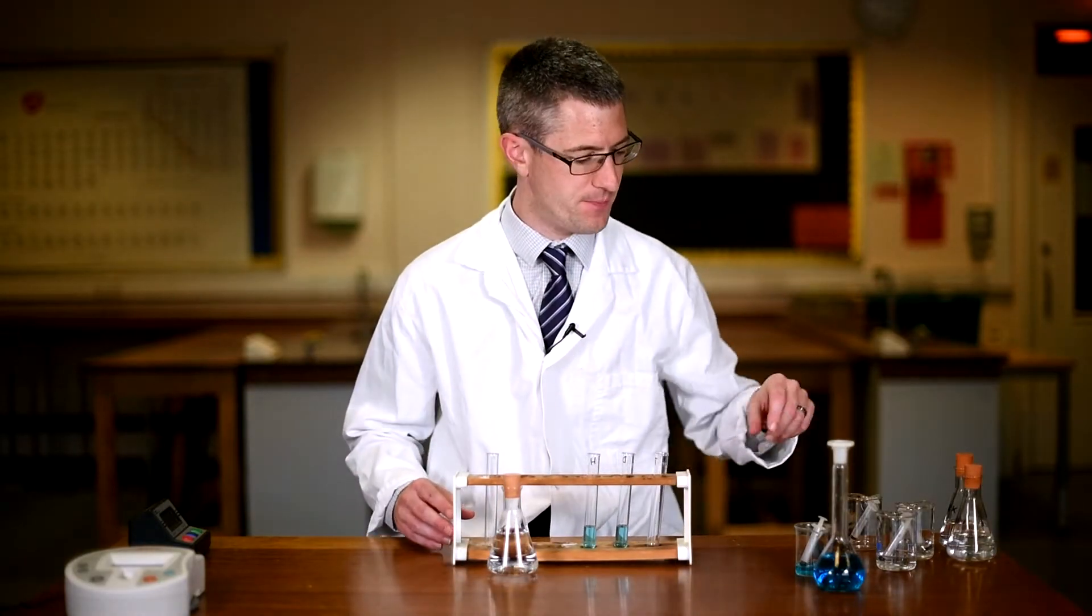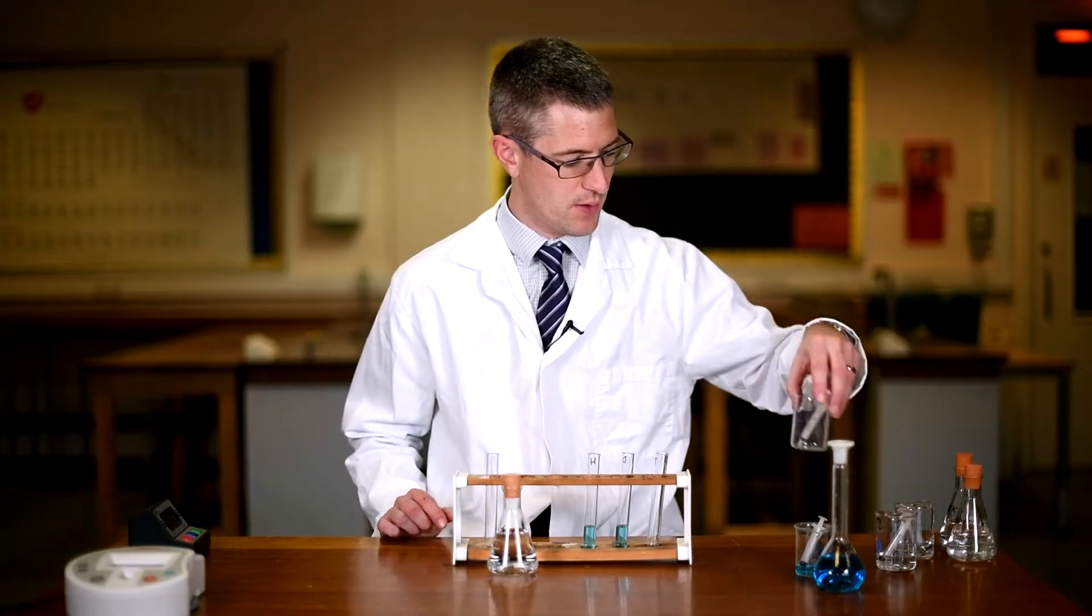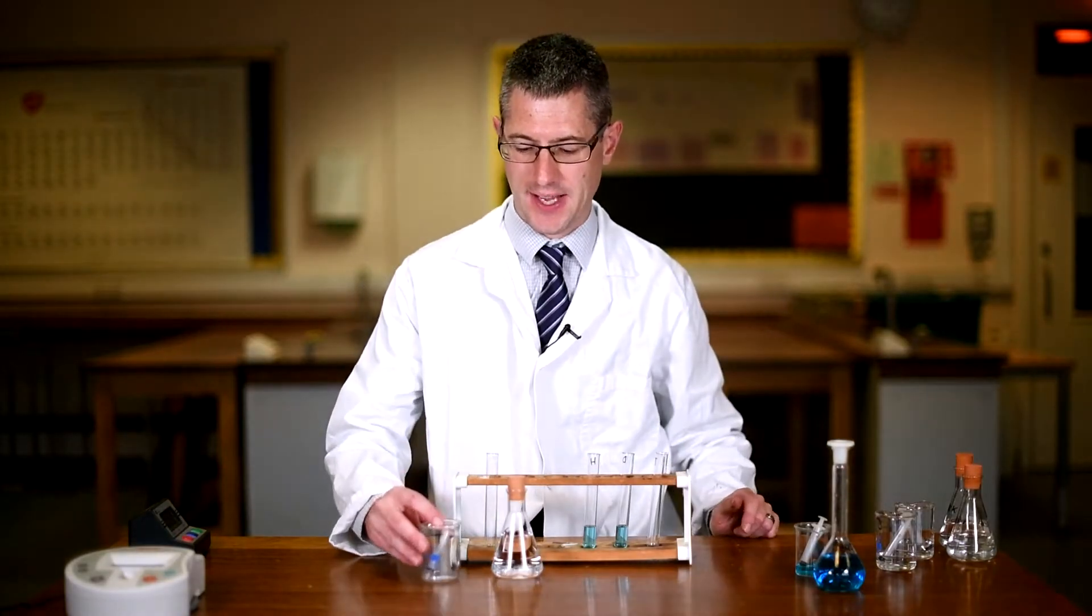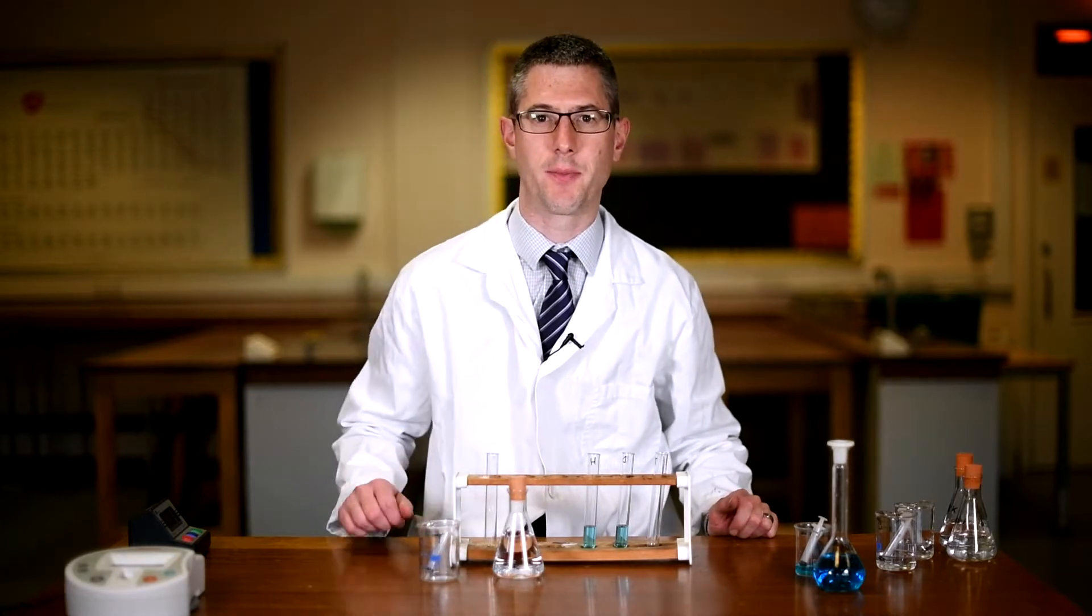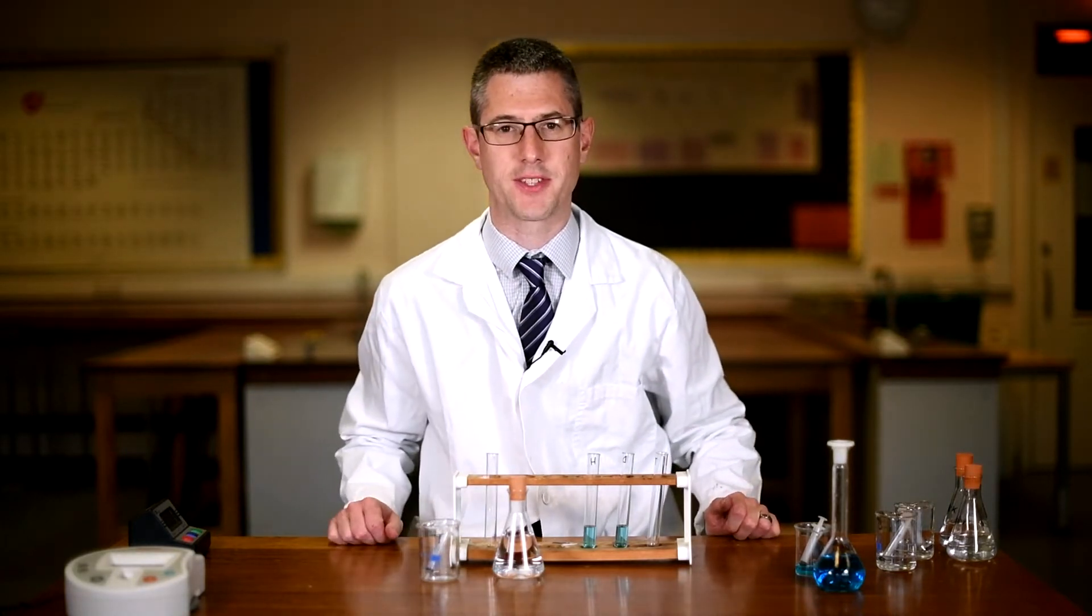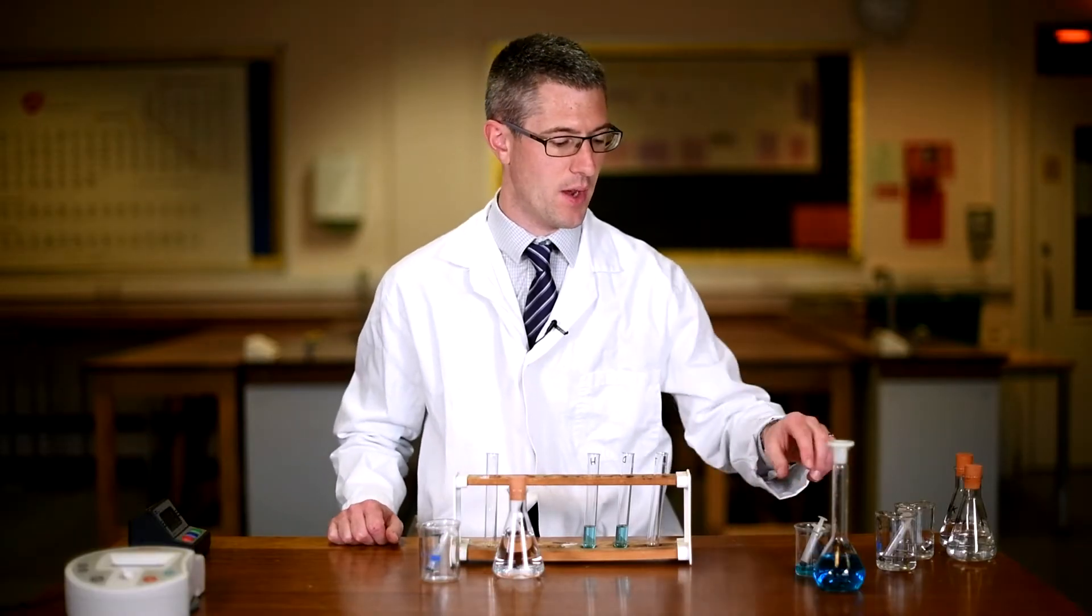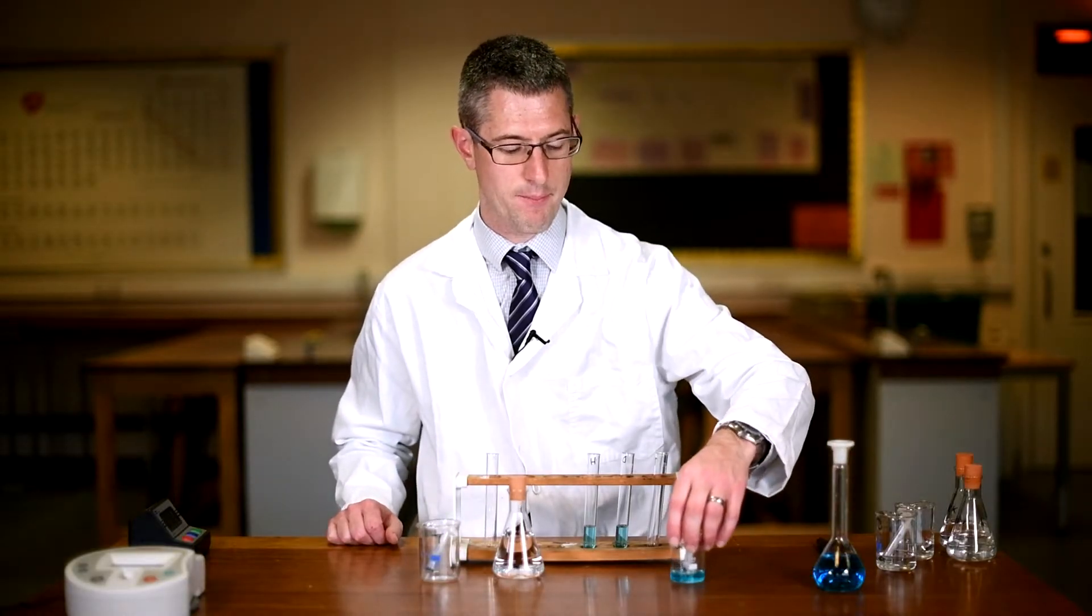We need a test tube, a beaker so that we can easily get hold of our urine and decant it from the conical flask into the beaker so we can then measure it out with a syringe for accurate measurements of two milliliters. We also need some Benedict solution.